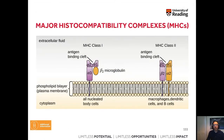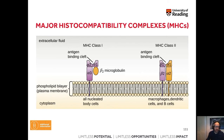So what are the major histocompatibility complexes, or MHCs? There are two classes of those receptors: MHC class 1 receptors and MHC class 2 receptors. MHC class 1 receptors are present in all nucleated body cells — this includes not only cells of the immune system, but all other cells in our body. In contrast, MHC class 2 molecules are only expressed by certain cells of the immune system, namely macrophages, dendritic cells, and B cells.